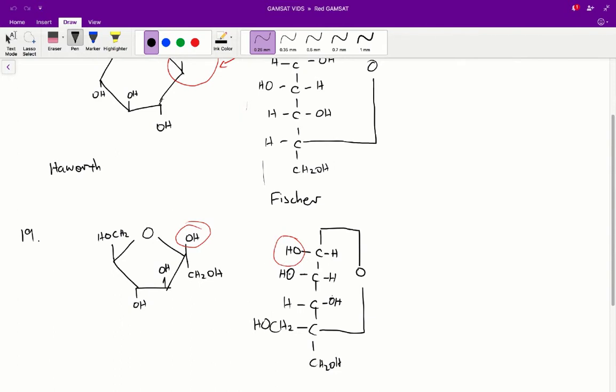And just going down, we'd expect our OH group to be again on the left side for the second carbon and on the right side for the third carbon. So we have this sort of pattern. So in this case, B is the correct answer.